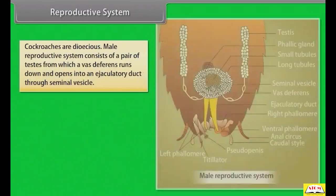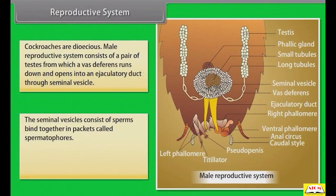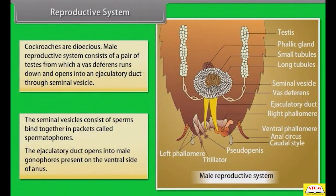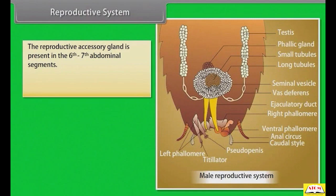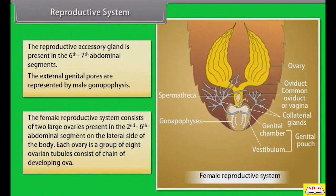Cockroaches are dioecious. The male reproductive system consists of a pair of testes from which a vas deferens runs down and opens into an ejaculatory duct through a seminal vesicle. The seminal vesicles consist of sperm bound together in packets called spermatophores. The ejaculatory duct opens into male gonopores present on the ventral side of the anus. The female reproductive system consists of two large ovaries present in the 2nd to 6th abdominal segments on the lateral side of the body. Each ovary is a group of eight ovarian tubules consisting of a chain of developing ova.